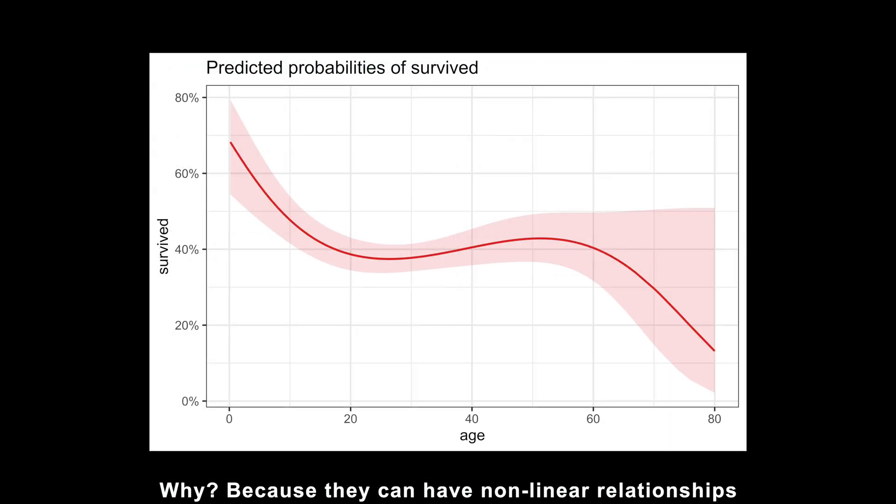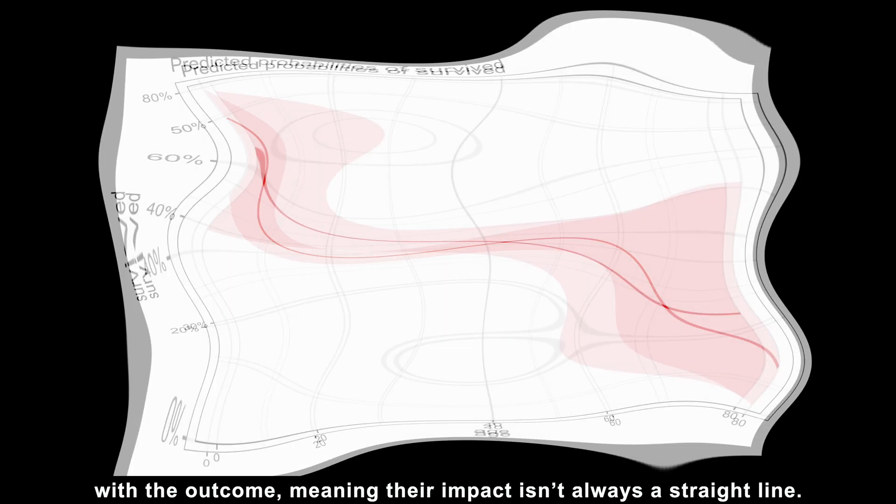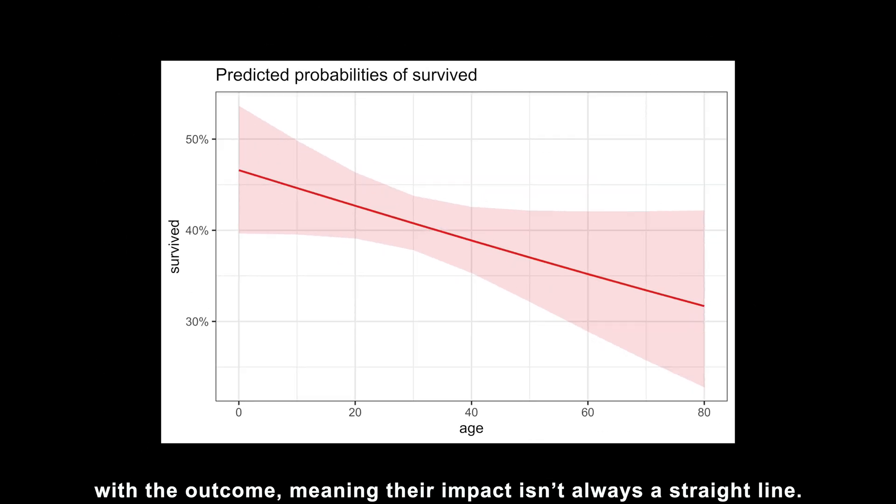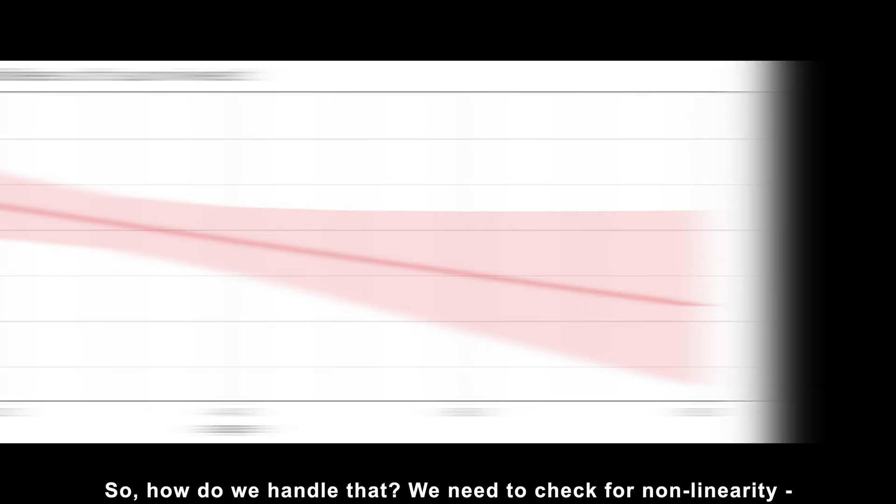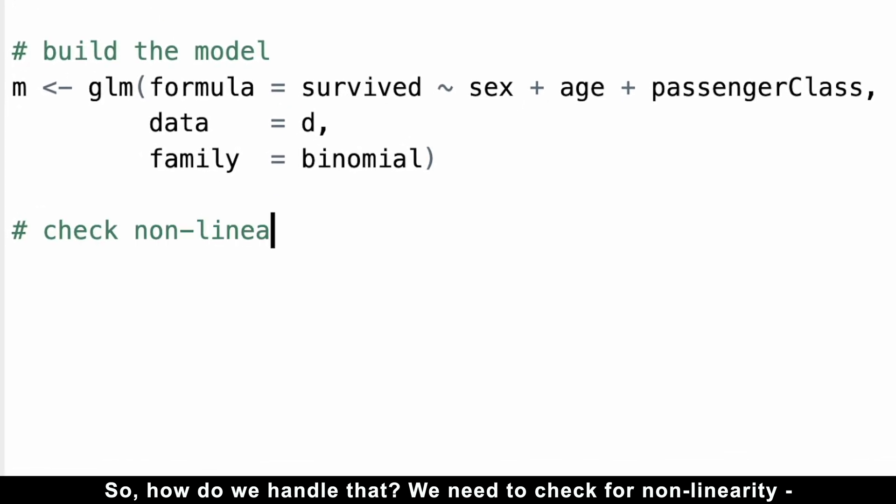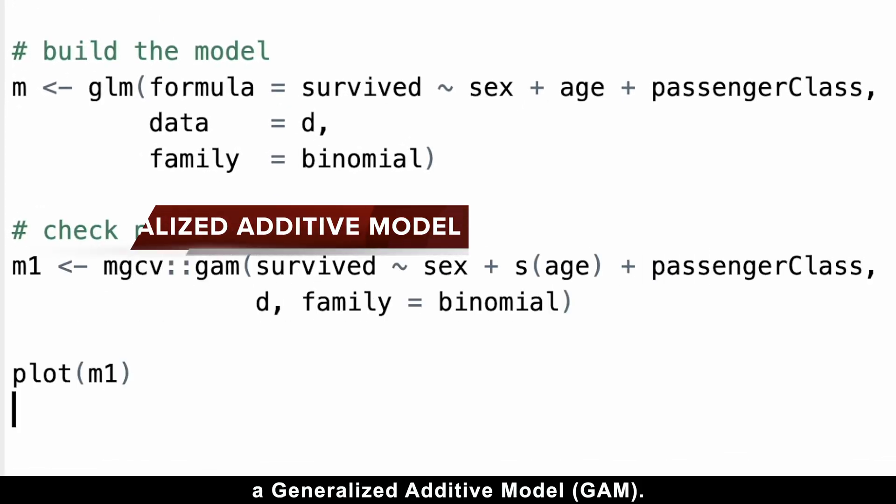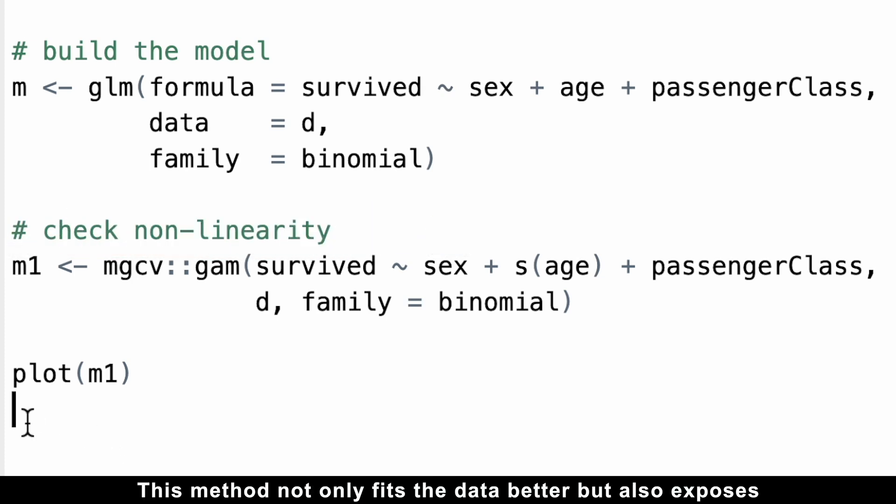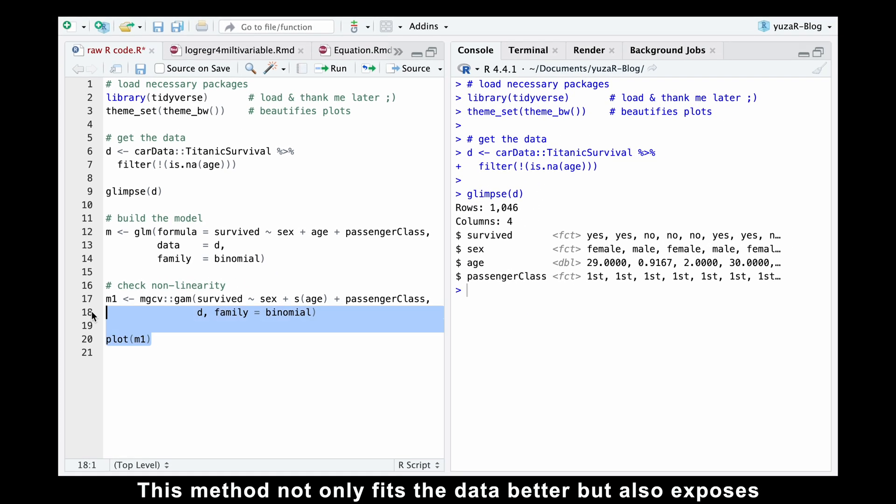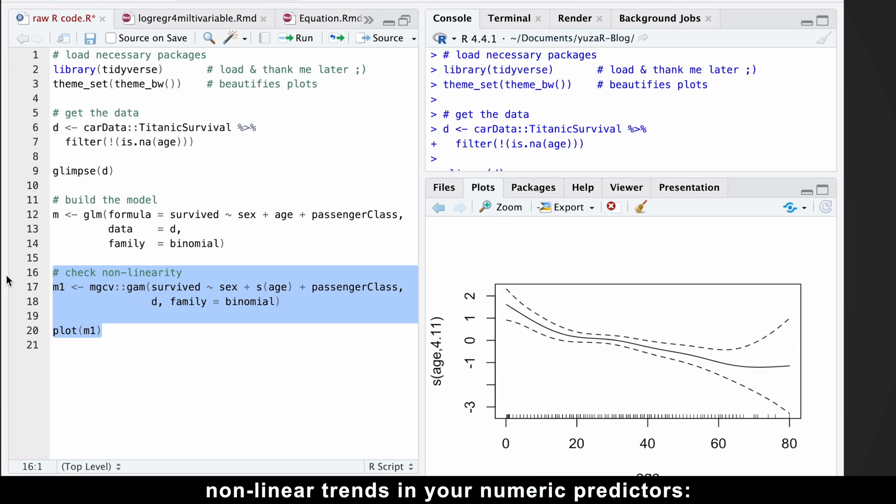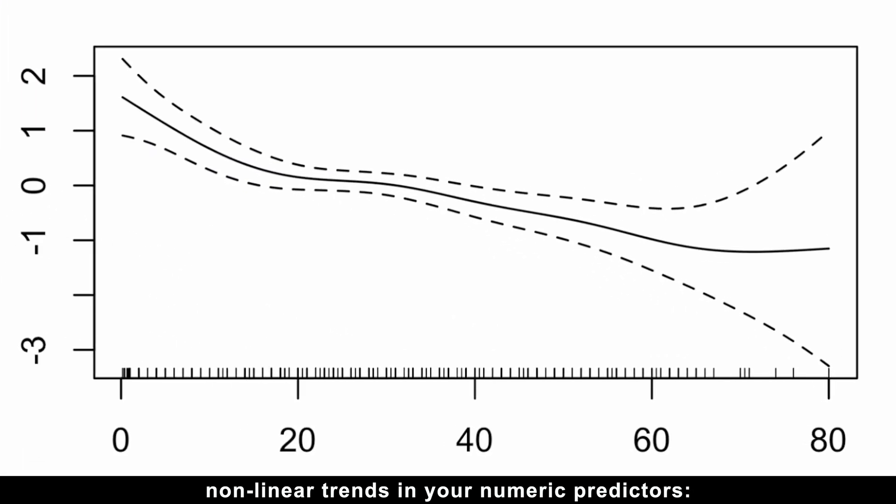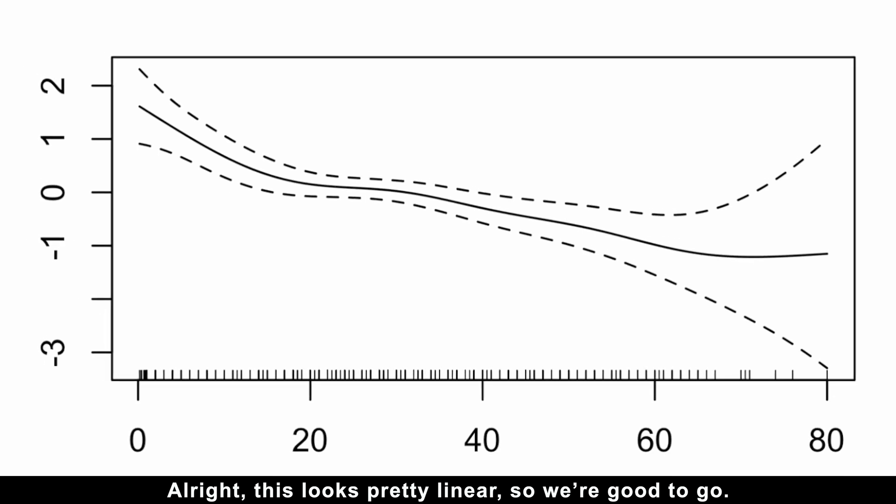Why? Because they can have nonlinear relationships with the outcome, meaning their impact isn't always a straight line. So, how do we handle that? We need to check for nonlinearity, and one of the fastest ways to do this is with a generalized additive model. This method not only fits the data better, but also exposes nonlinear trends in your numeric predictors. Alright, this looks pretty linear, so we're good to go.